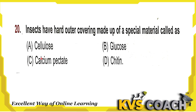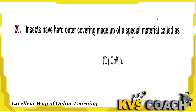Next question: insects have a hard outer covering made of a special material called what? Chitin. Cellulose is the outer layer of green plants. Glucose is the end product of metabolism. Chitin is a semi-transparent, tough substance that covers the outer layer of arthropods. So the right answer is chitin.